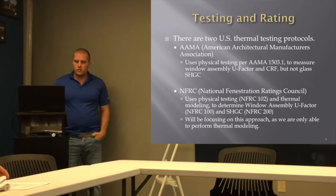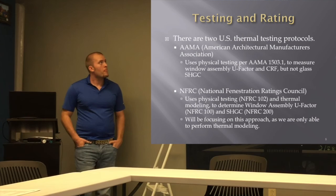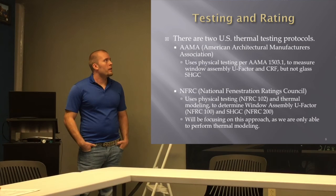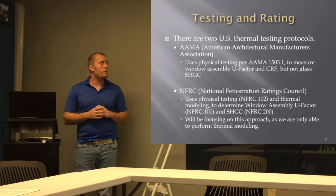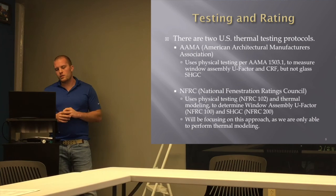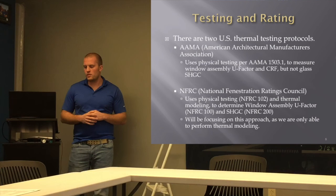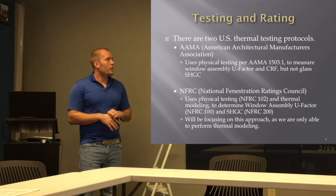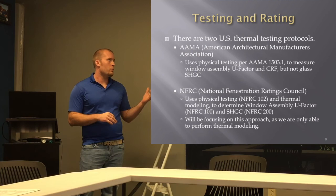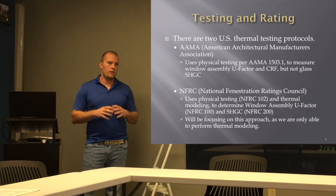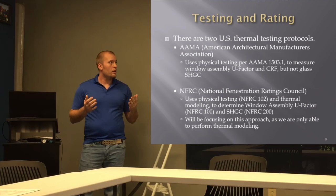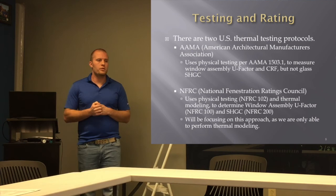There are two U.S. thermal testing protocols. AMA uses physical testing per AMA 1503.1, measuring U-factor and condensation resistance but not solar heat gain coefficient. NFRC uses both physical testing per NFRC-102 and thermal modeling — NFRC-100 for U-factor and NFRC-200 for solar heat gain coefficient. NFRC is the only standard protocol for calculation-based thermal resistance measurement, making it the right reference when producing sealed calculations.